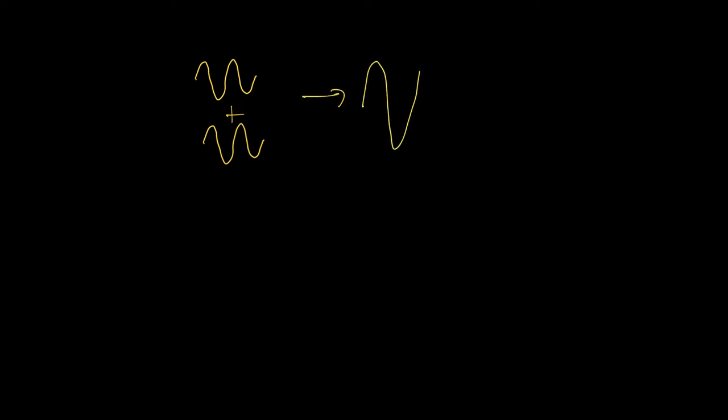Imagine a waveform coming from one loudspeaker, and the other loudspeaker has the exact same waveform. If you add these two together, the amplitude actually doubles. When two waves of the same type are meeting, their displacements can add or subtract just like vectors. If these two sets of waves are exactly in phase, the combined wave has an amplitude equal to the sum of the two amplitudes. This is what we call constructive interference — they're building on top of each other.